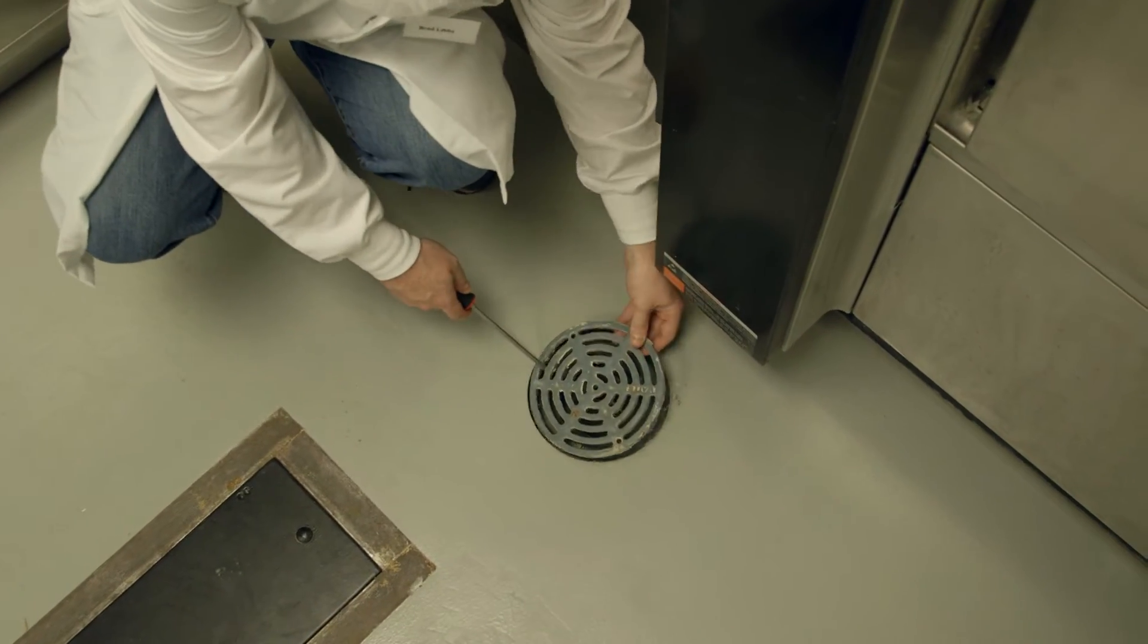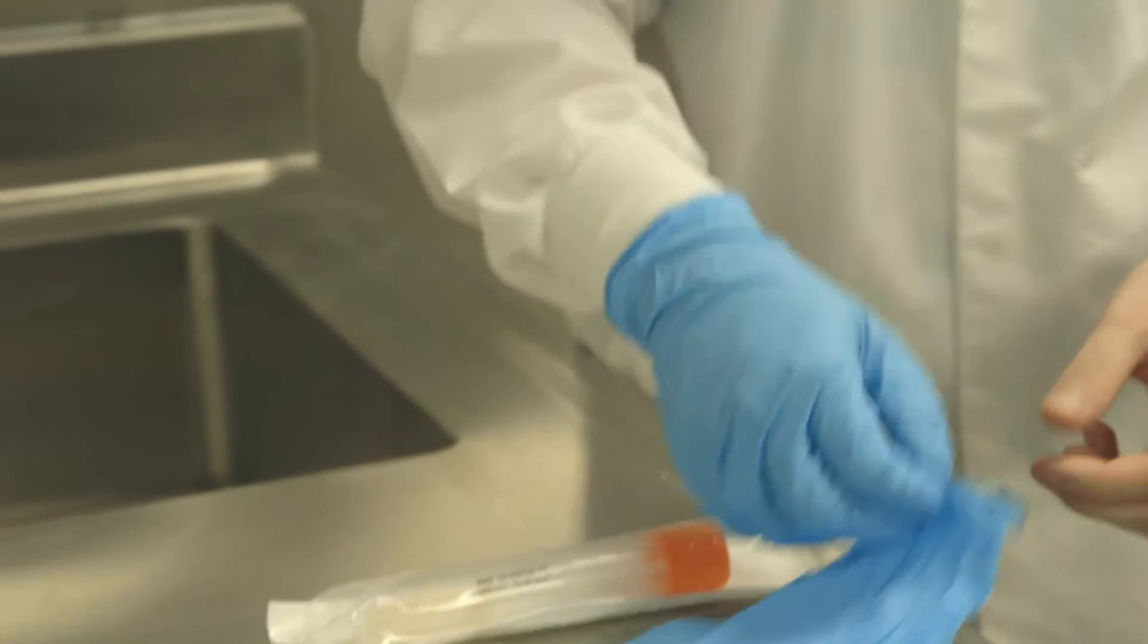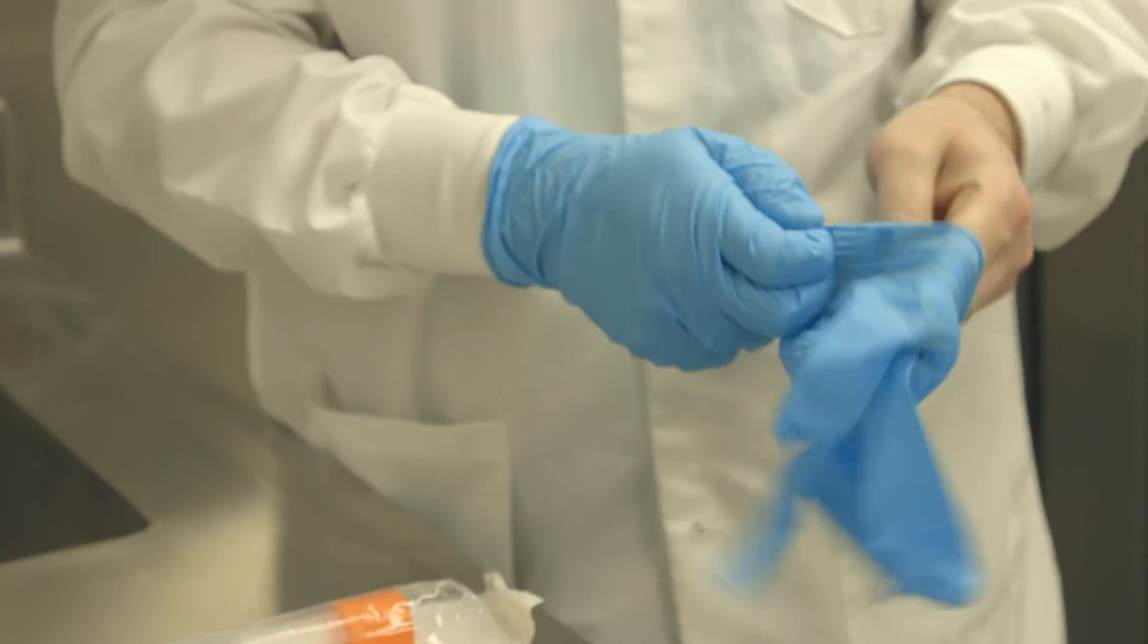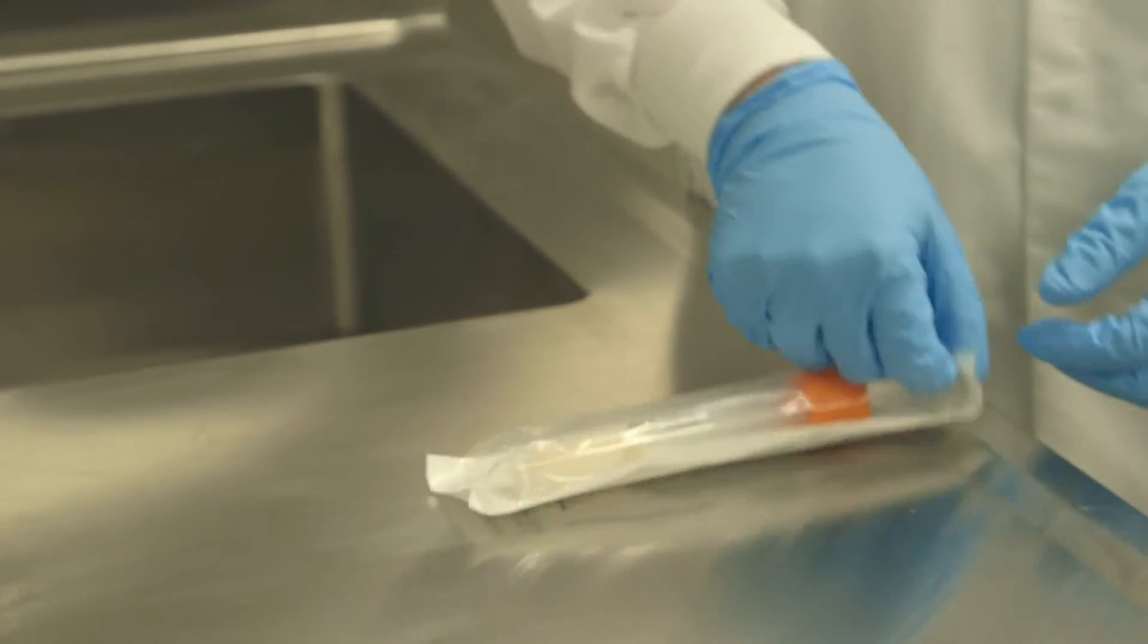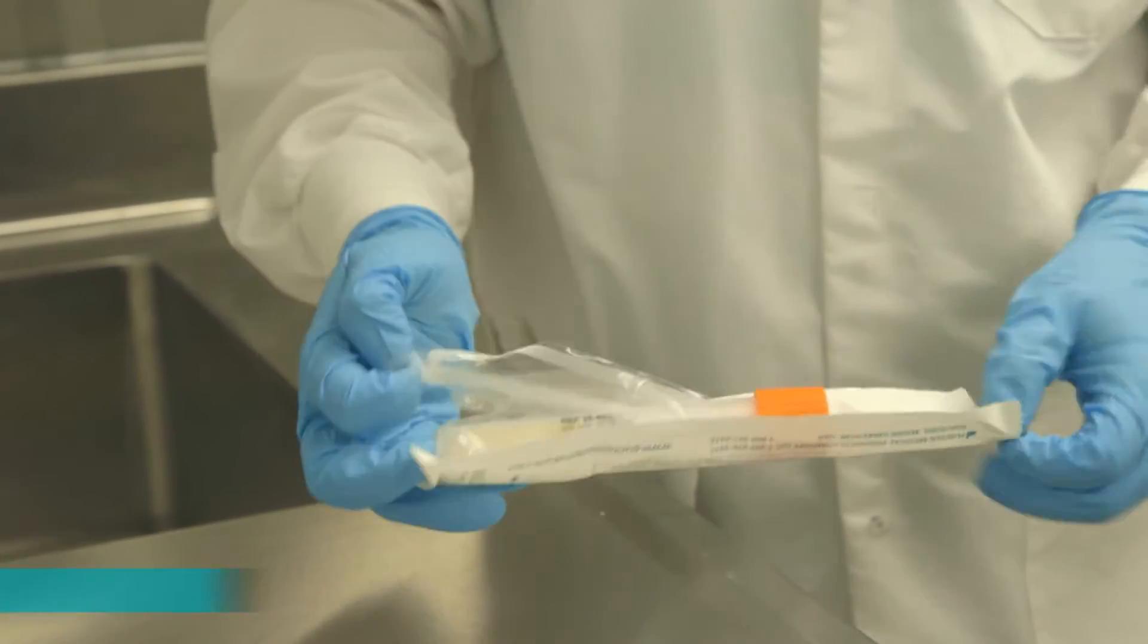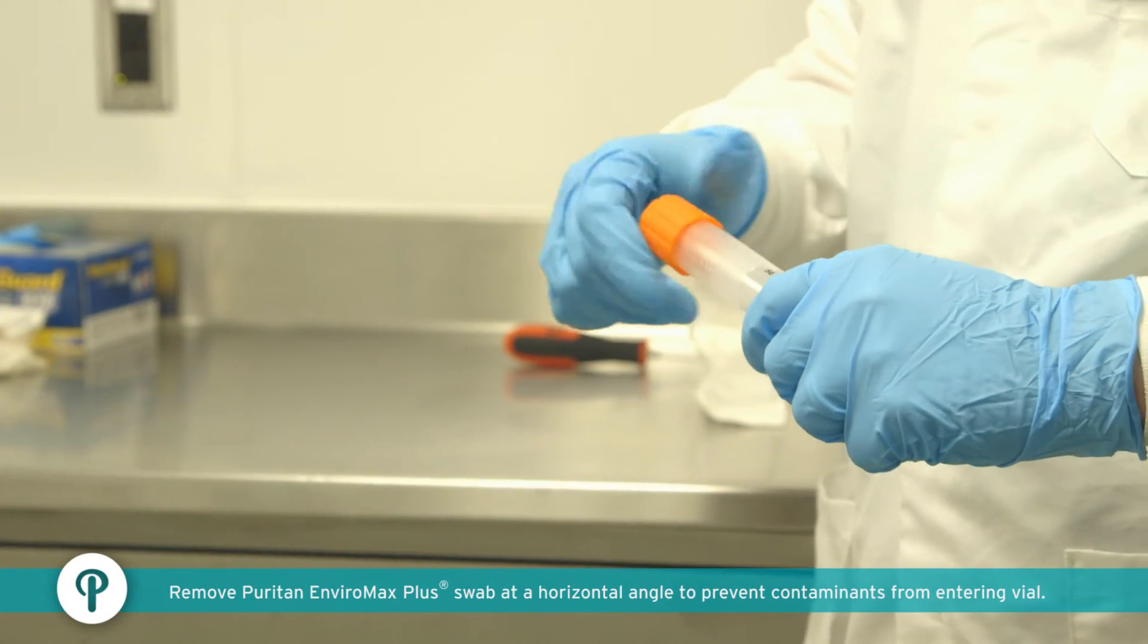Remove floor drain grid. Put latex gloves on hands. Remove Puritan Enviromax Plus swab from vial by holding the cap and twisting counterclockwise.